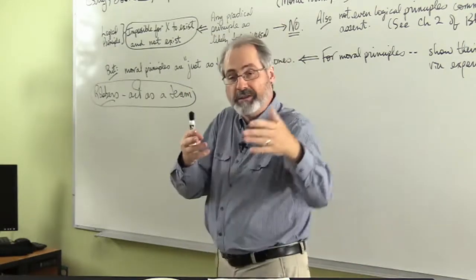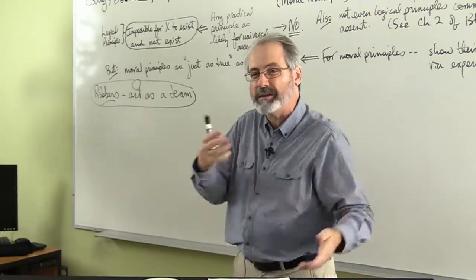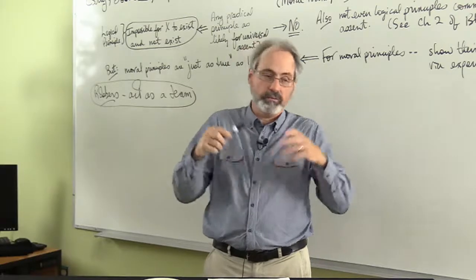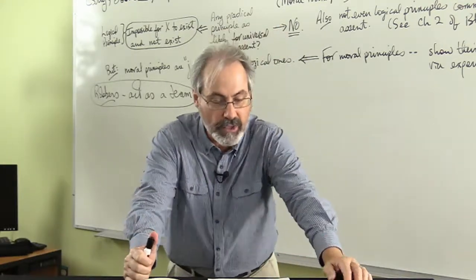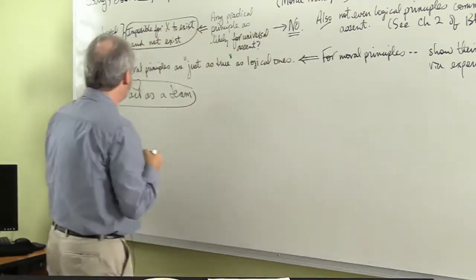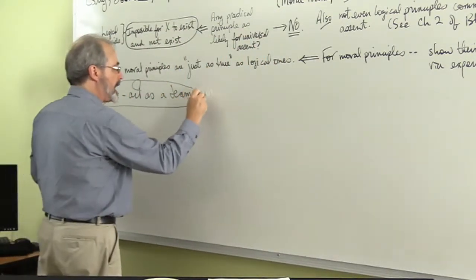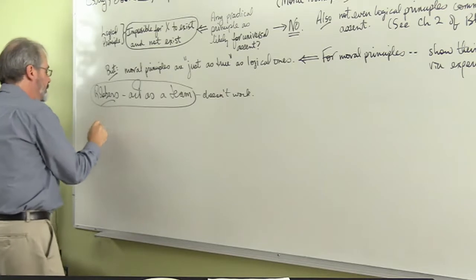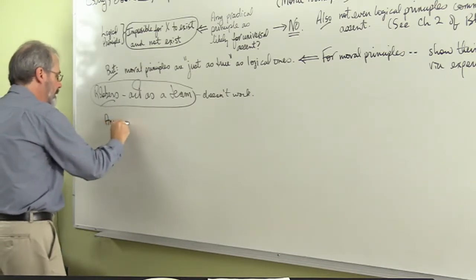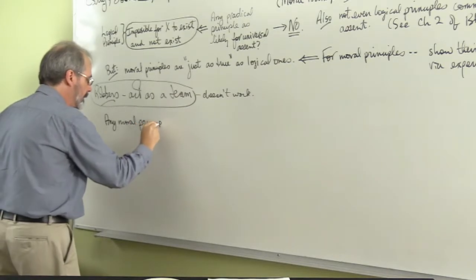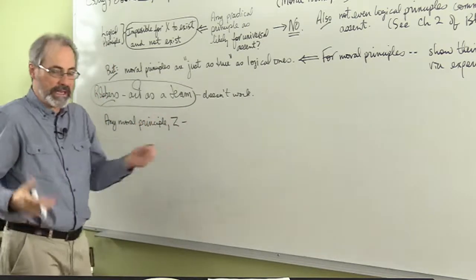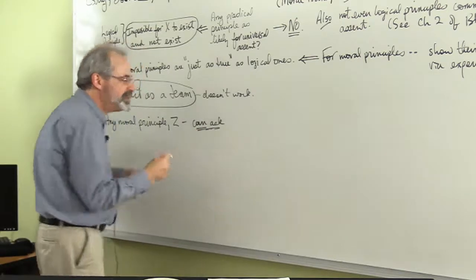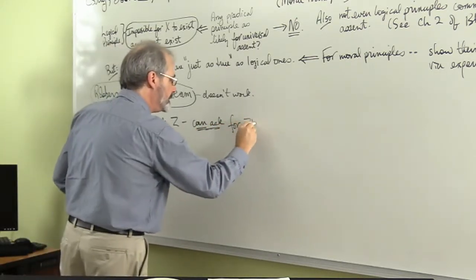Locke also says, and so in the rest of this chapter, he goes through a number of arguments that people have in favor of innate moral principles. So I'm going to list a few of them and give you Locke's responses to them. So for instance, think of any moral principles. So the rob, we've looked at the robber as a team, that doesn't work. How about this one? Think of a, Locke says that any moral principle, any moral principle Zed, anyone you want to come up with, you can ask, you can ask legitimately for Zed's justification.